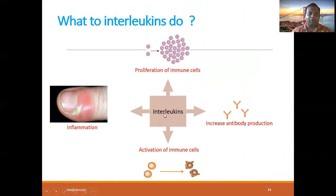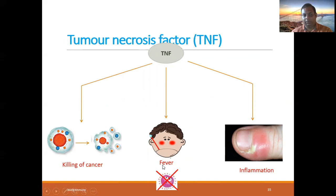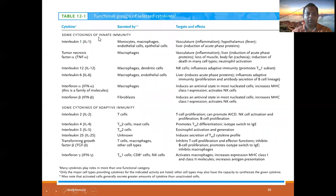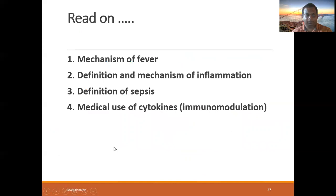Interleukins have multiple roles: proliferation of immune cells, inflammation, antibody production, and activation of immune cells. TNF causes fever, helps kill cancer cells, and provokes inflammation. Key interleukins include IL-4, IL-5, IL-2, and IL-1. TNF-alpha and interferon-gamma are also important.